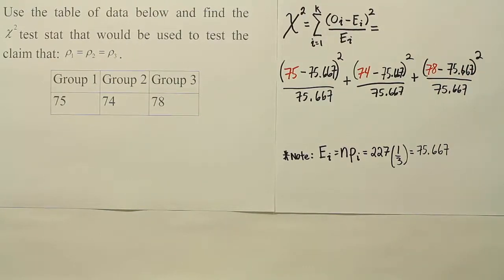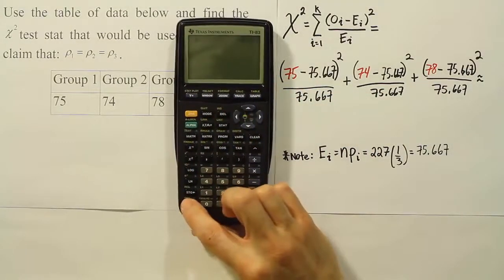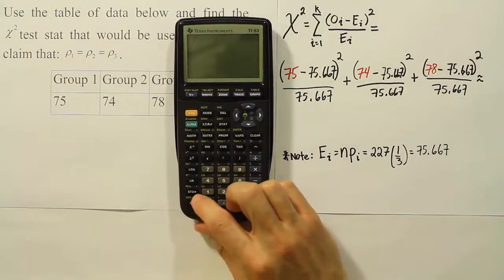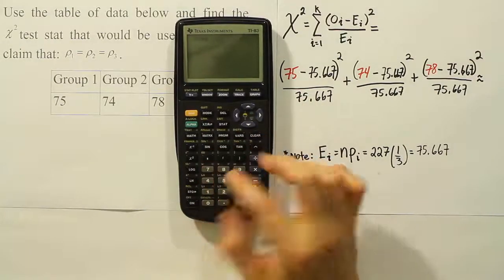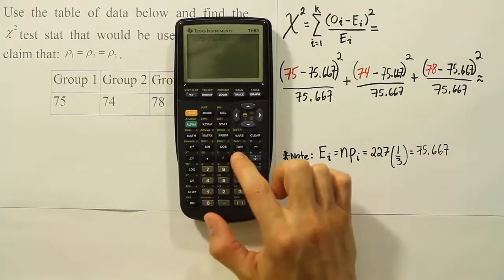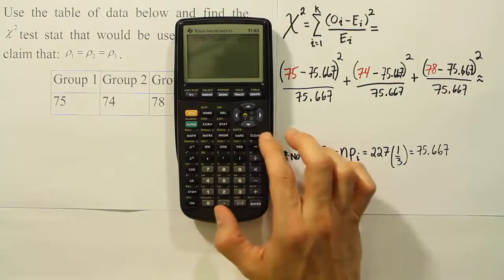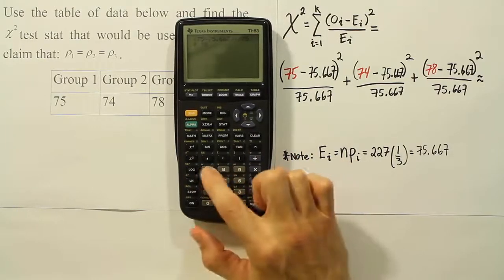And to do that, we're going to use the calculator. And we'll be able to do it much more efficiently than we did it in the other videos. So here we go. Let's enter in the statements. So I'll use open parenthesis, 75 minus 75.667. Close it up. Square it. Divide by the same 75.667.